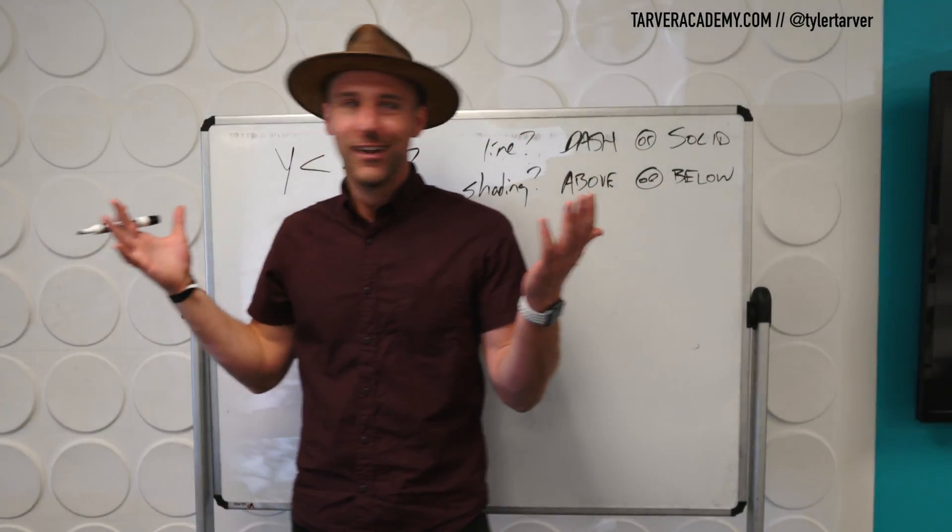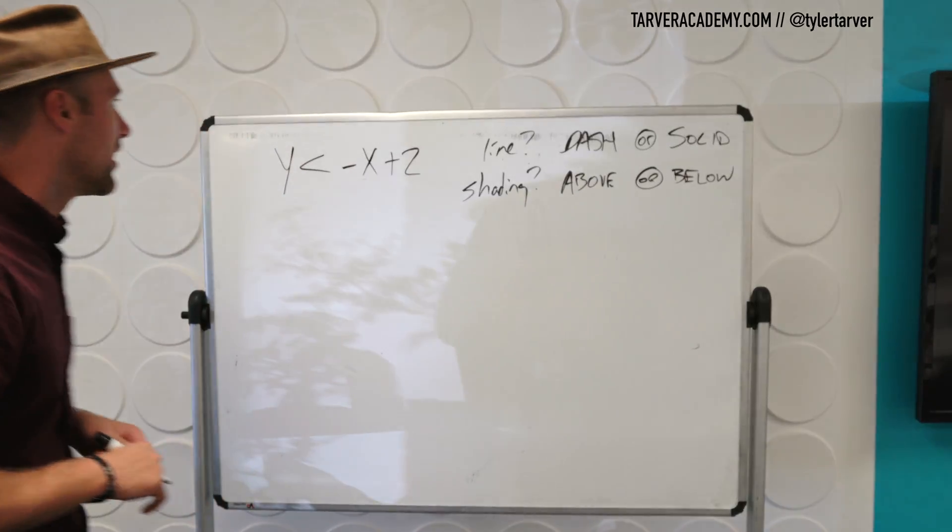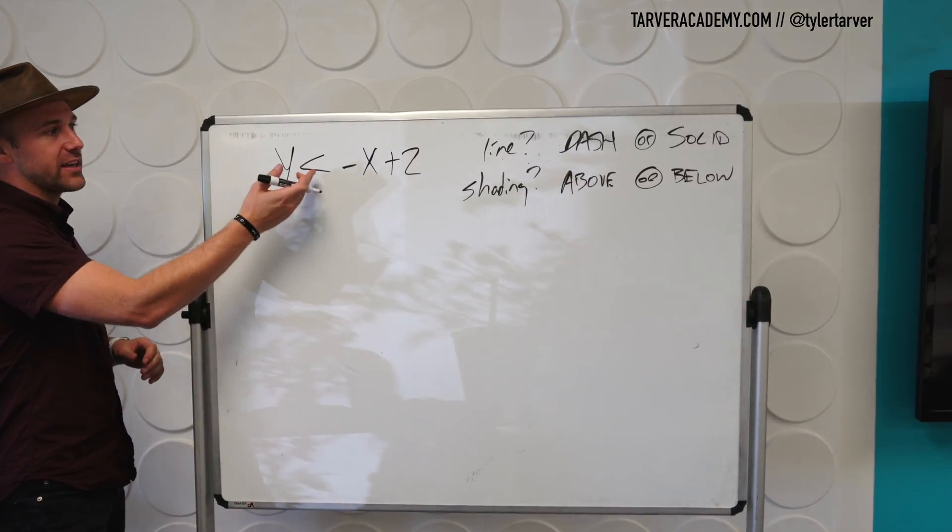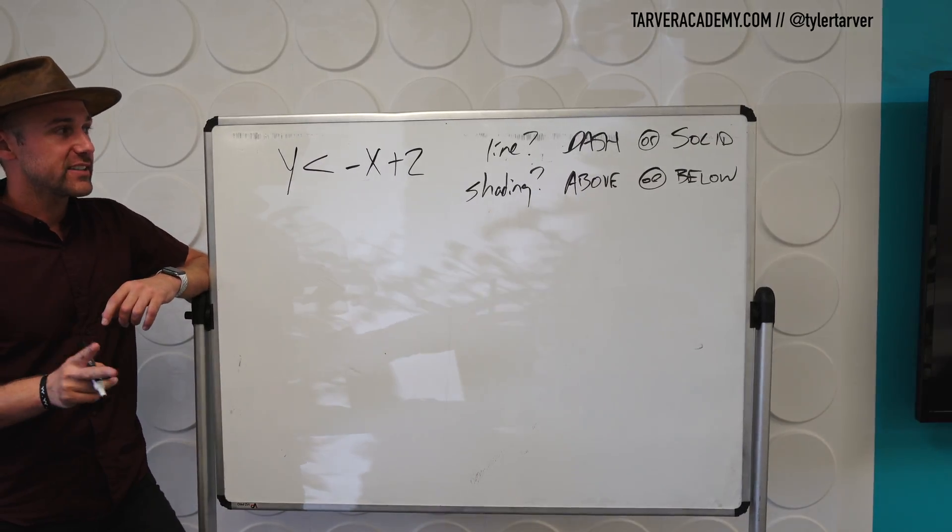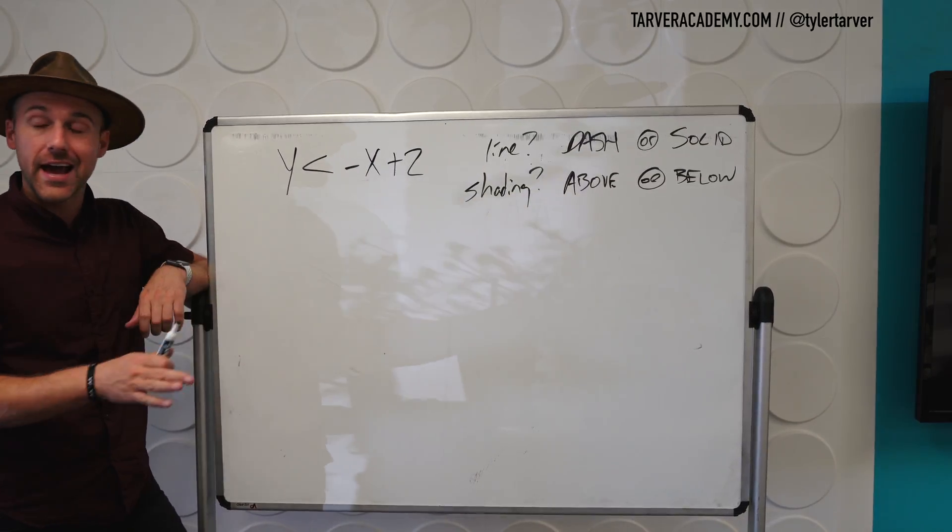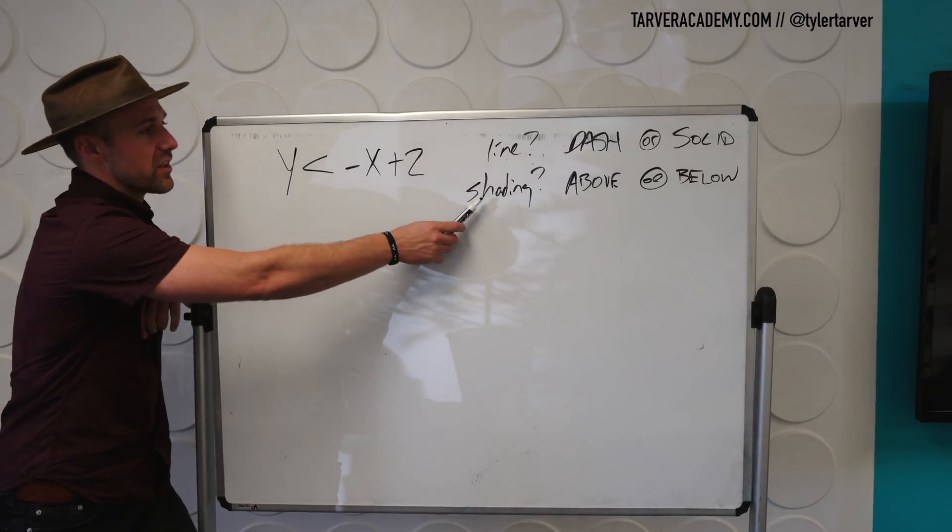What up, ladies and gentlemen? Let's learn some math, shall we? Okay, so our equation is y is less than negative x plus 2. And the two things they want us to find out: is the line dash or solid, and shading.